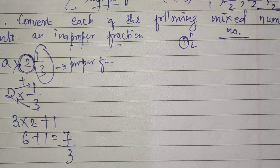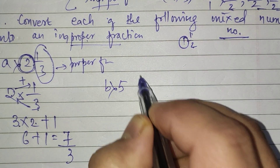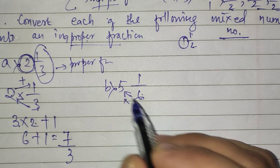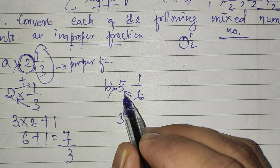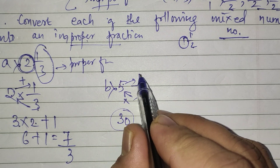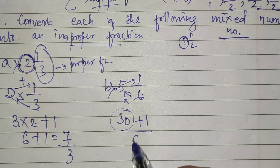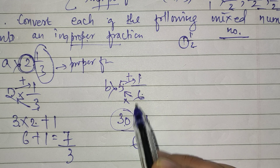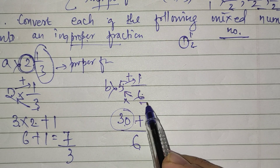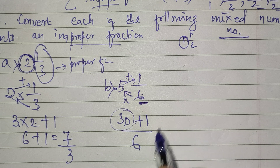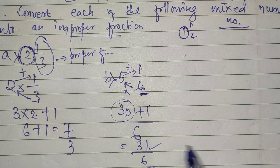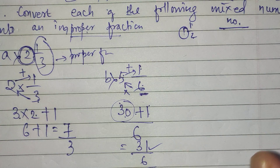For part B, 5 whole 1 by 6: multiply 6 times 5 to get 30, then add 1 to get 31, keeping the denominator 6. So it becomes 31 by 6. You can see the numerator is greater here, so this is an improper fraction.